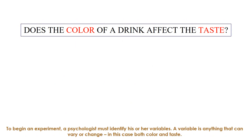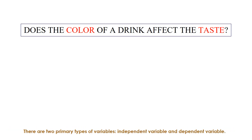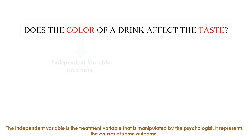To begin an experiment, a psychologist must identify his or her variables. A variable is anything that can vary or change — in this case both color and taste. There are two primary types of variables: independent variable and dependent variable. The independent variable is the treatment variable that is manipulated by the psychologist. It represents the cause of some outcome.